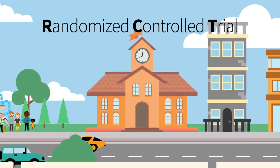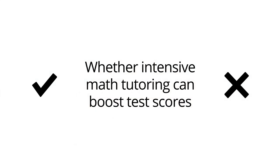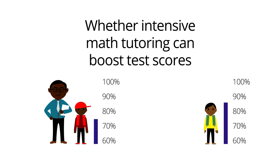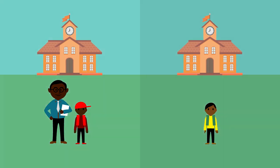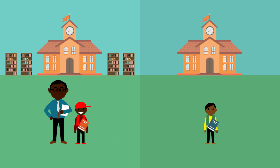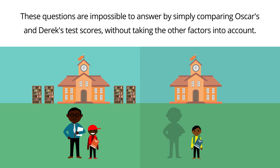Measuring social programs is complicated. For example, to determine whether intensive math tutoring can boost test scores, one may consider two hypothetical ninth grade students: Oscar, who receives tutoring, and Derek who doesn't. At the end of the school year, if Oscar's scores rise and Derek's do not, one might conclude that tutoring worked. But we don't know for sure whether the tutoring program was responsible. Maybe Oscar went to a school with more resources, used a different textbook, or was simply more excited about math to begin with. These questions are impossible to answer by simply comparing their test scores without taking the other factors into account.